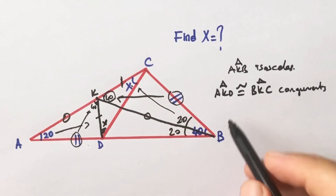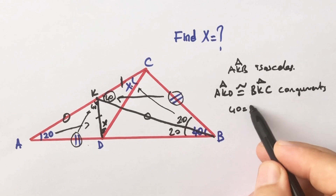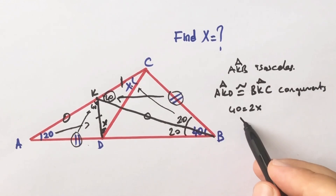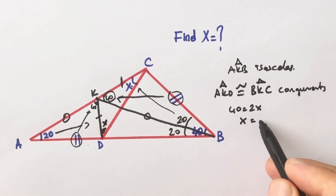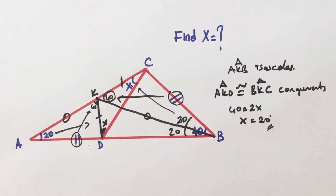We know that two interior angles equal one exterior angle, so x is going to be 20 degrees.